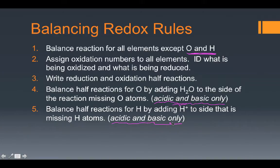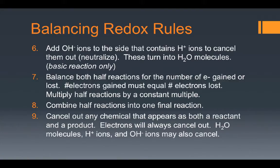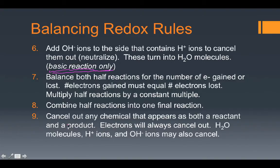Step five is the same situation. Step six only applies to basic solutions — we'll tackle that in later videos. Then the last steps — seven, eight, and nine — are where we deal with everything. Step seven is the key step: this is where we balance electrons, making sure the electrons released during the oxidation process equal the number gained during the reduction process. Feel free to rewind or pause the video to get these rules copied down.